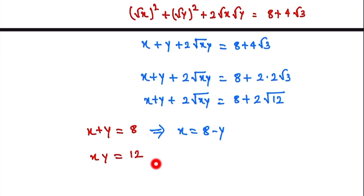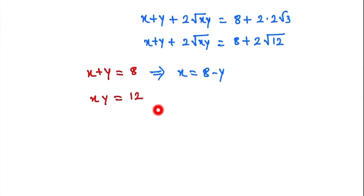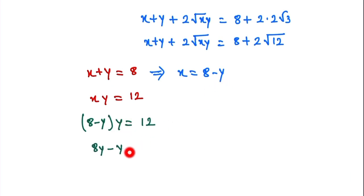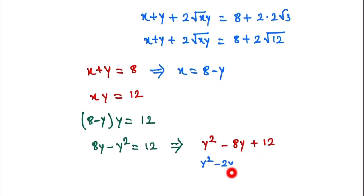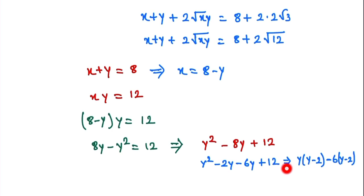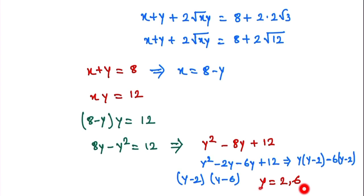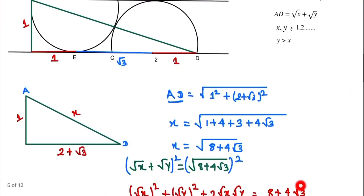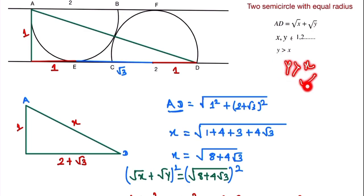Substituting x = 8 − y into xy = 12 gives: y(8 − y) = 12, which rearranges to the quadratic y² − 8y + 12 = 0. Factoring: (y − 2)(y − 6) = 0, so y = 2 or y = 6. Since y must be greater than x, we have y = 6 and x = 2.